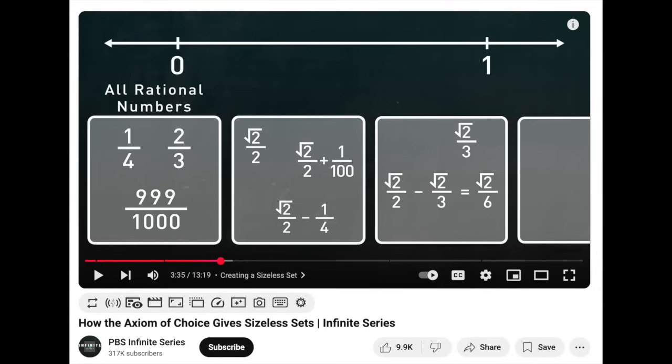This construction means that, for instance, the uncomputable number, Chaitin's omega u, is in one of those sets, as are all the other numbers that differ from it by a rational number. Now, you might wonder which set that might be, or, more importantly,